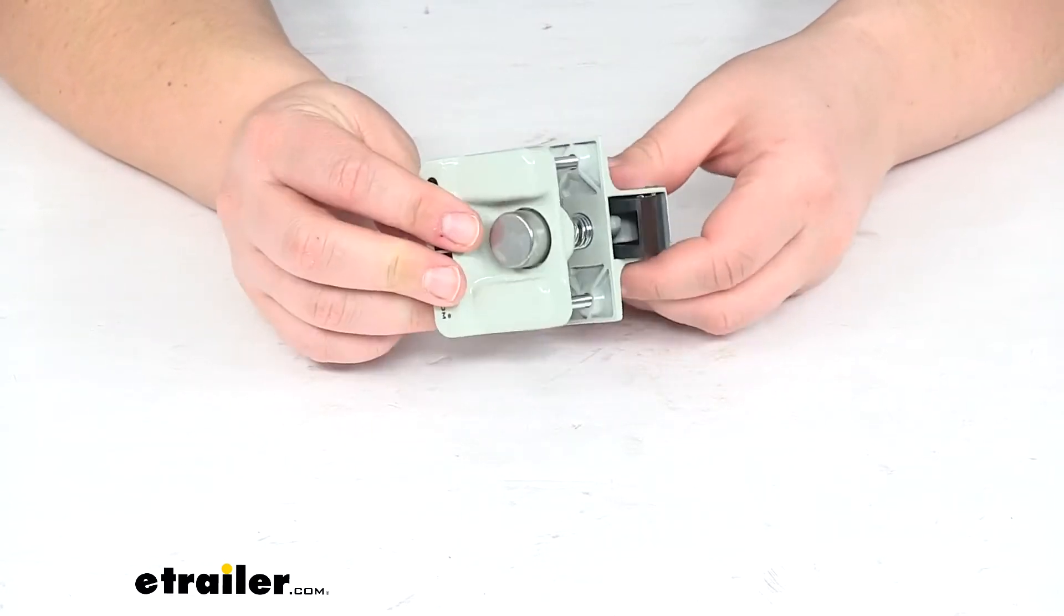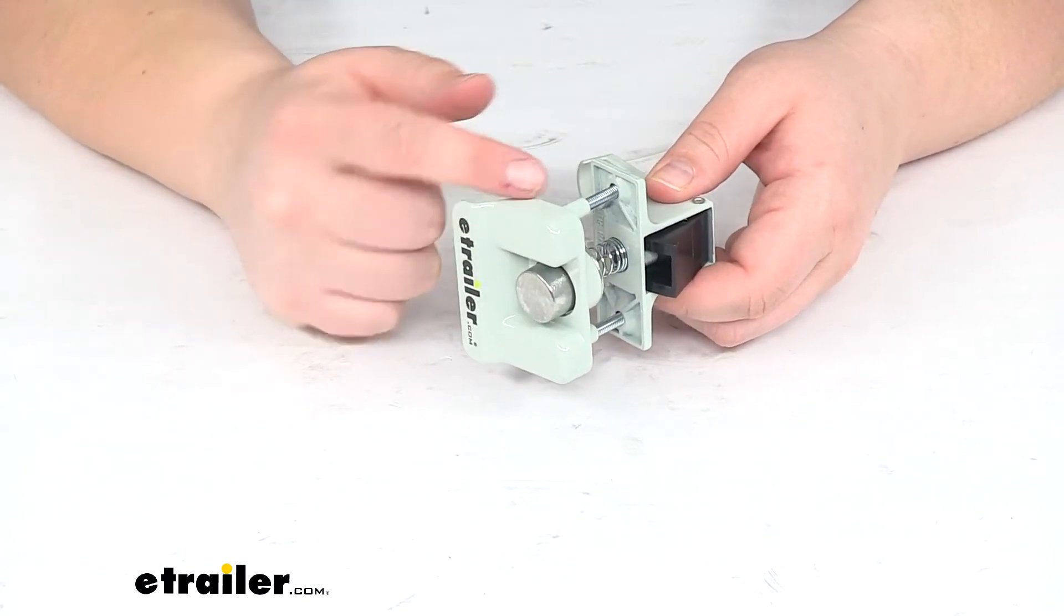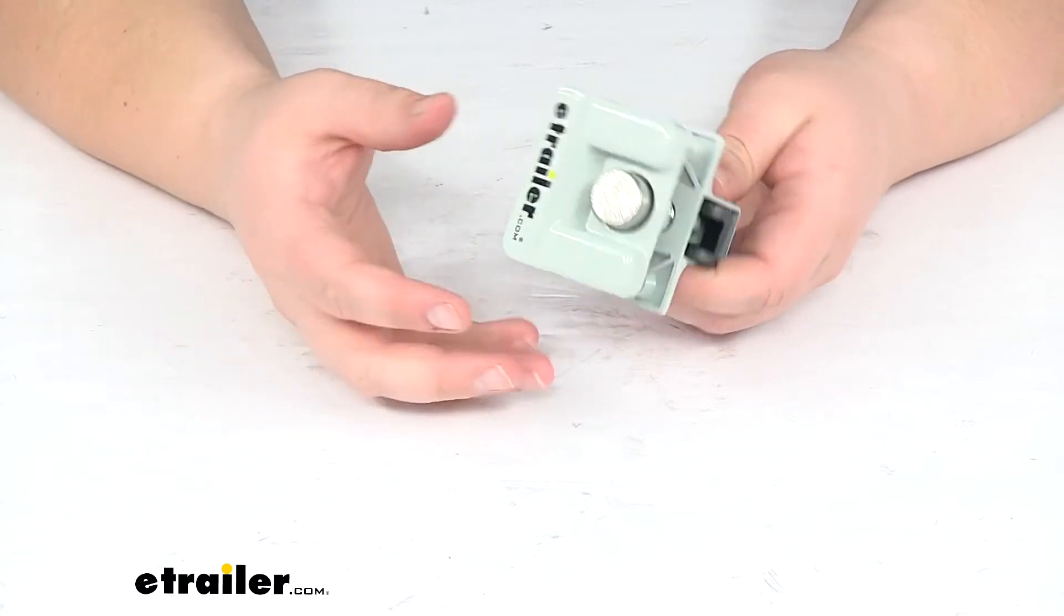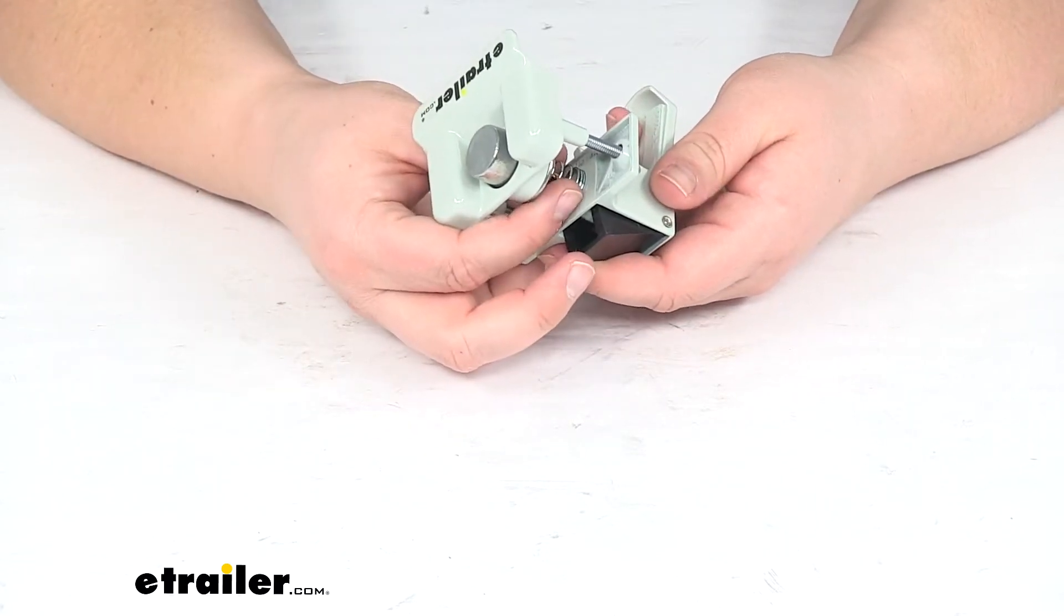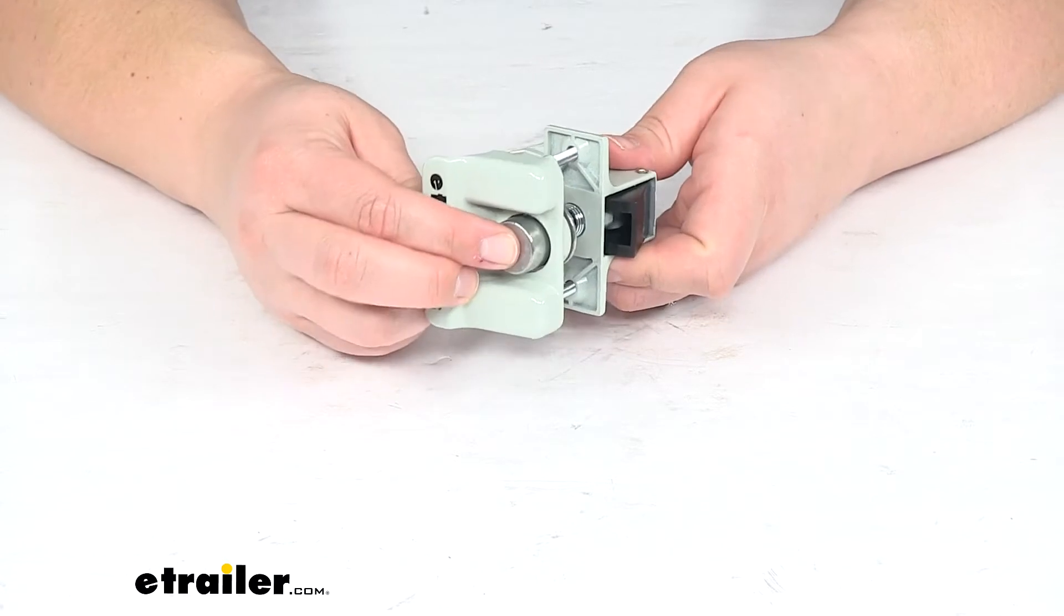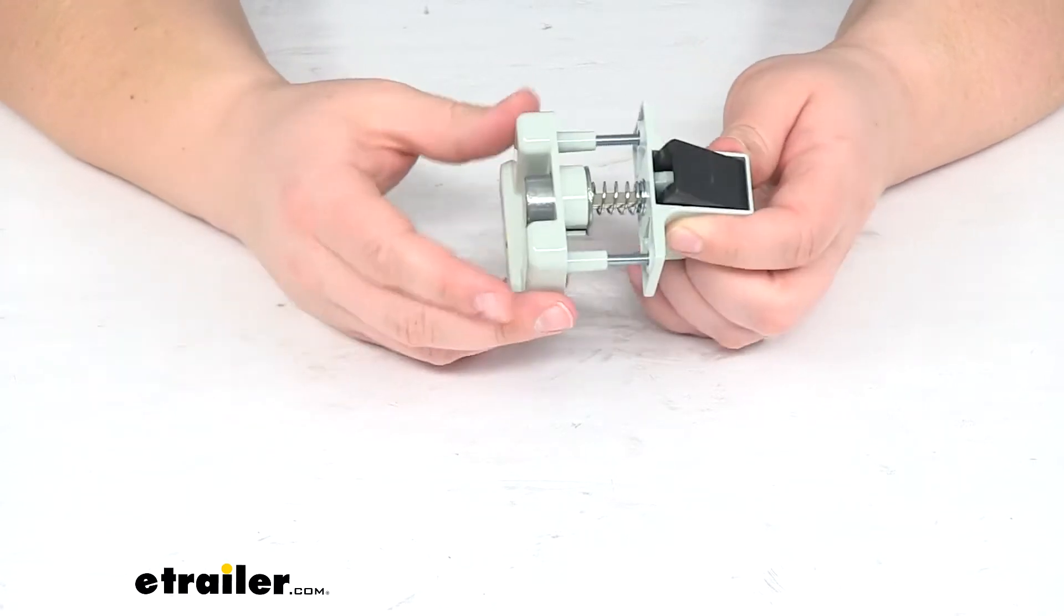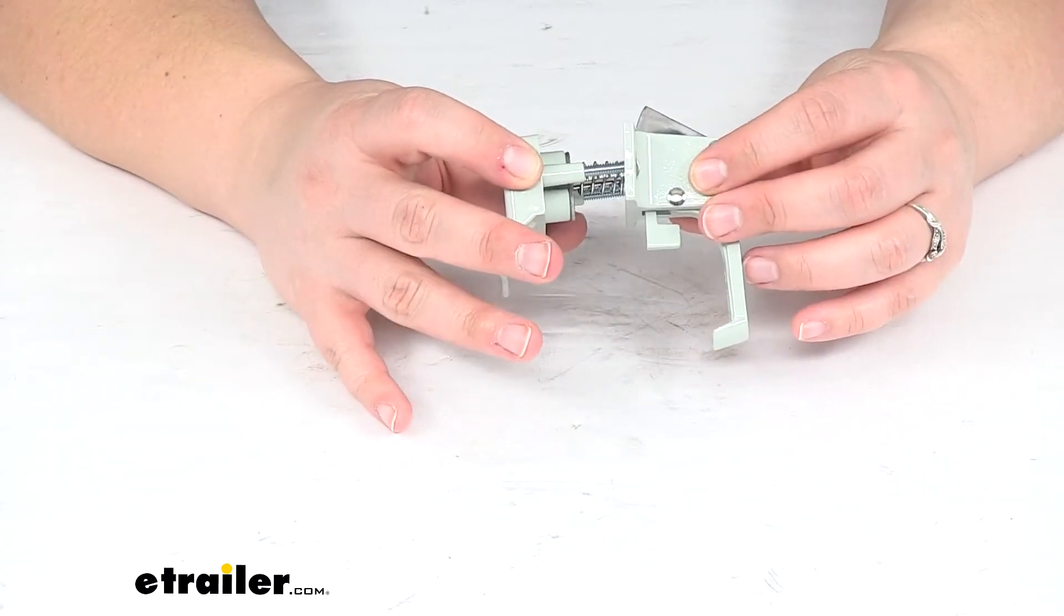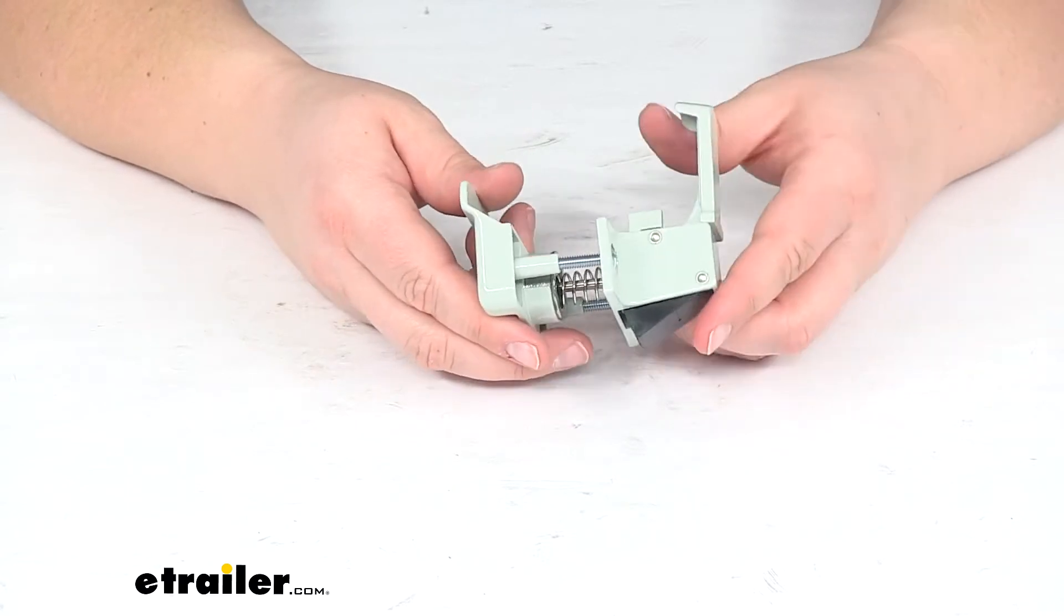So it's going to come with the two pieces and the mounting screws to get this installed, and also our spring and the turning mechanism and that little push button to deploy it. I have it more or less assembled how it's going to look on your RV.